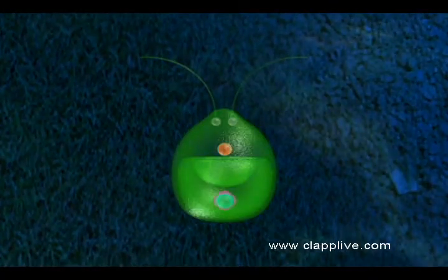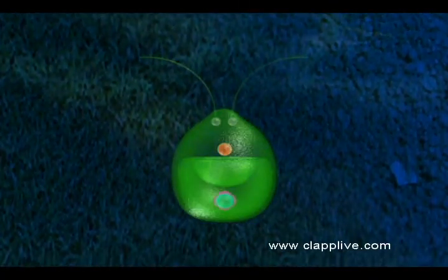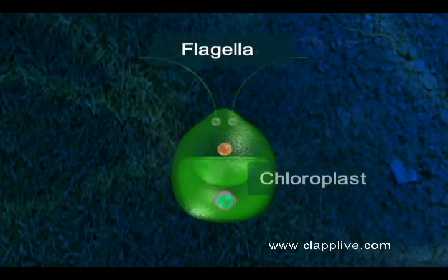Chlamydomonas reproduces asexually by zoospore formation. It is a unicellular motile alga with two flagella and a cup-shaped chloroplast.